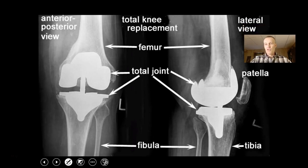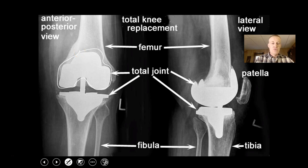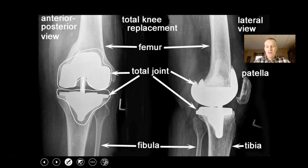This is a total knee replacement. We take out part of the femur, grind it out, and put in a replacement joint made of Teflon, stainless steel, or other materials. We shave off the tibia and insert material between the two. The patella they leave in place — that's called a total knee replacement.